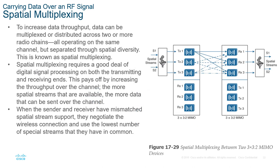Spatial multiplexing increases data throughput by multiplexing and distributing data across two or more radio chains all operating on the same channel but separated through spatial diversity. For example, a 3×3 MIMO system has three transmit and three receive chains. Spatial multiplexing requires significant digital signal processing on both transmit and receive ends, but pays off with increased throughput. When sender and receiver have mismatched spatial stream support, they negotiate and use the lowest common number of spatial streams.